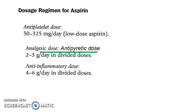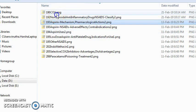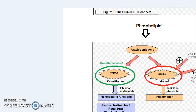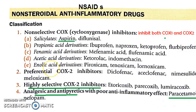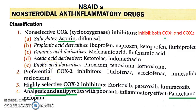Let us revise what we have covered. Phospholipids are converted into arachidonic acid. Arachidonic acid via COX-1 produces prostaglandins that maintain homeostasis — this is physiological. Pathologically, COX-2 is induced by cytokines and produces prostaglandins that support the inflammatory response. The main classification includes non-selective COX inhibitors — remember, the key word is inhibitors.